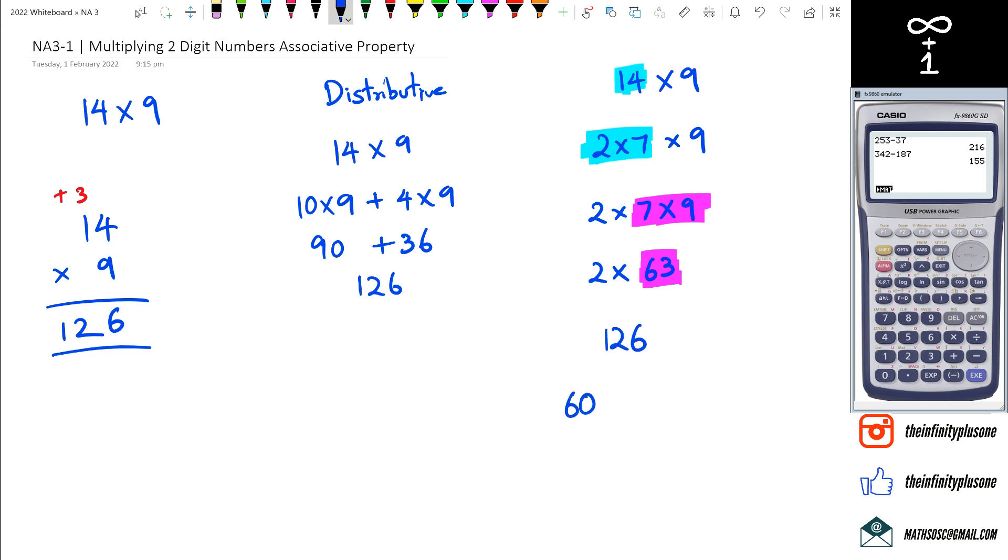And if you were to do it by distributive, you probably would have done 60 times 2 plus 3 times 2. 60 times 2 is 120, plus 3 times 2 is 6.